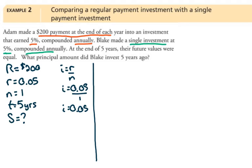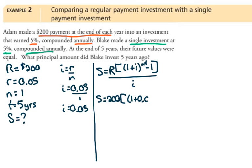Start working this out for Adam. We'll need to use the annuity formula. Substituting in what we know, R is 200, i is 0.05. The exponent will be 1 times 5.